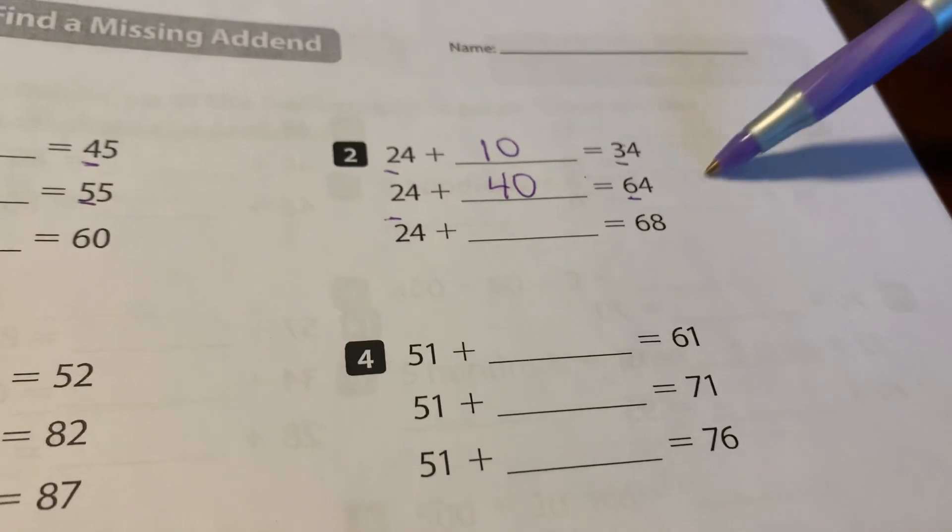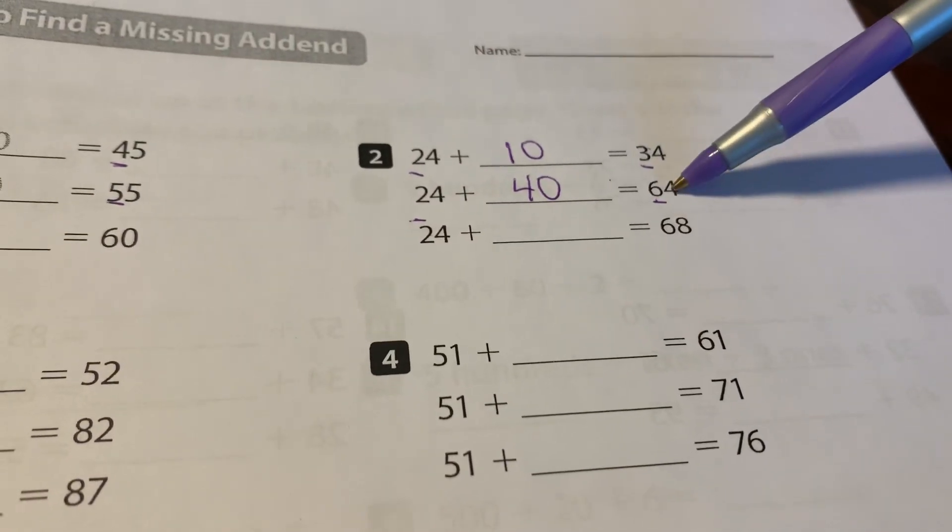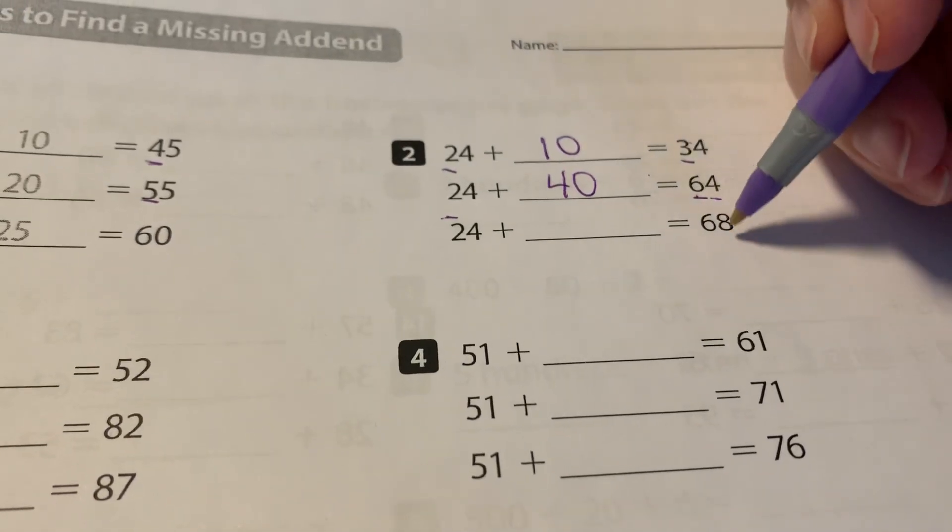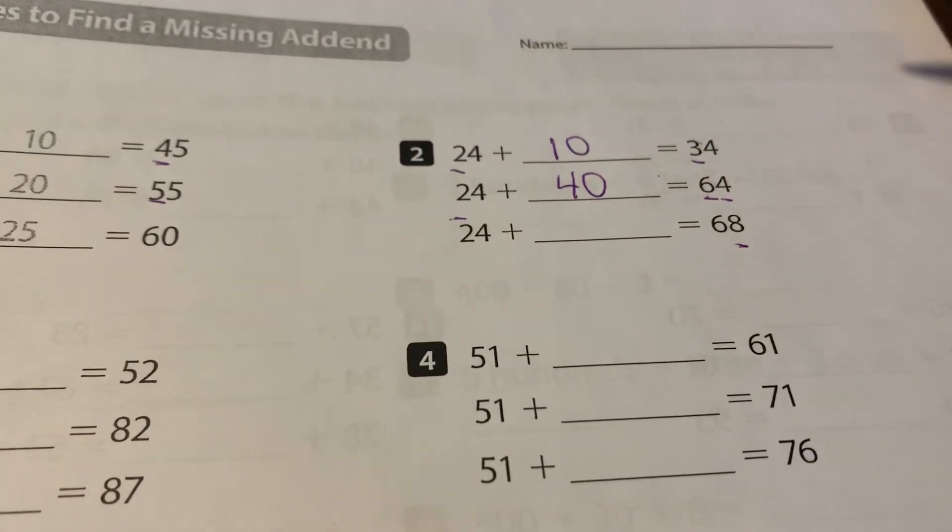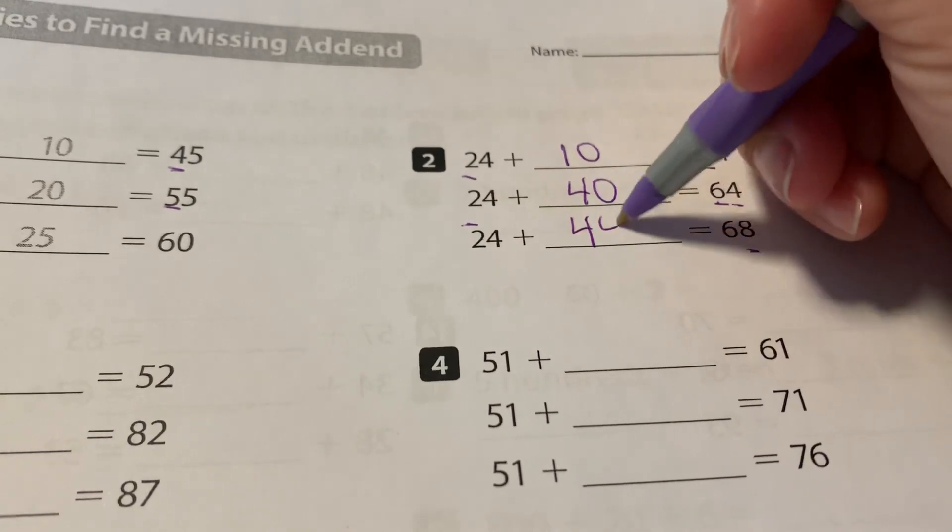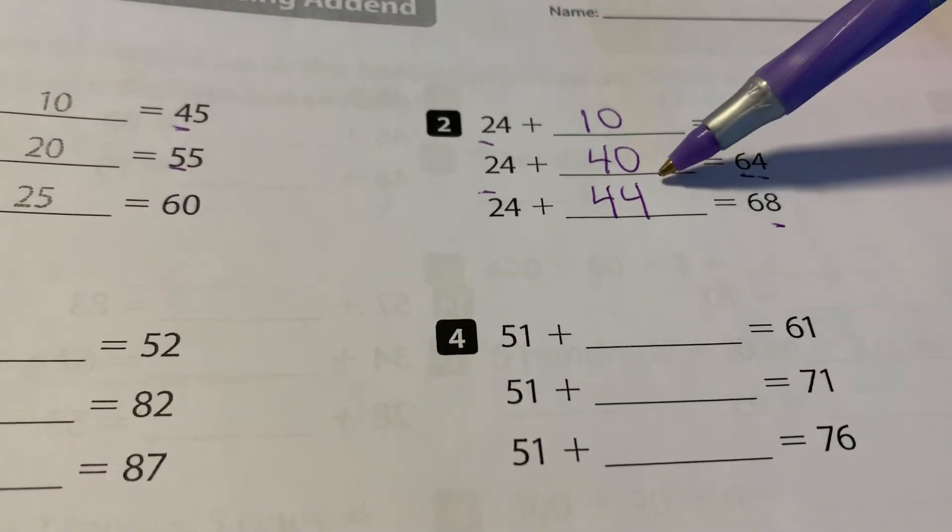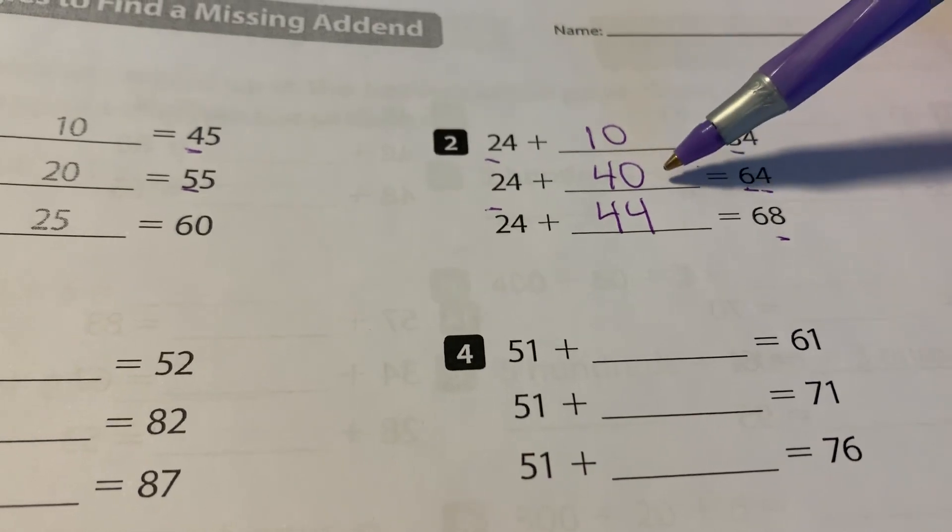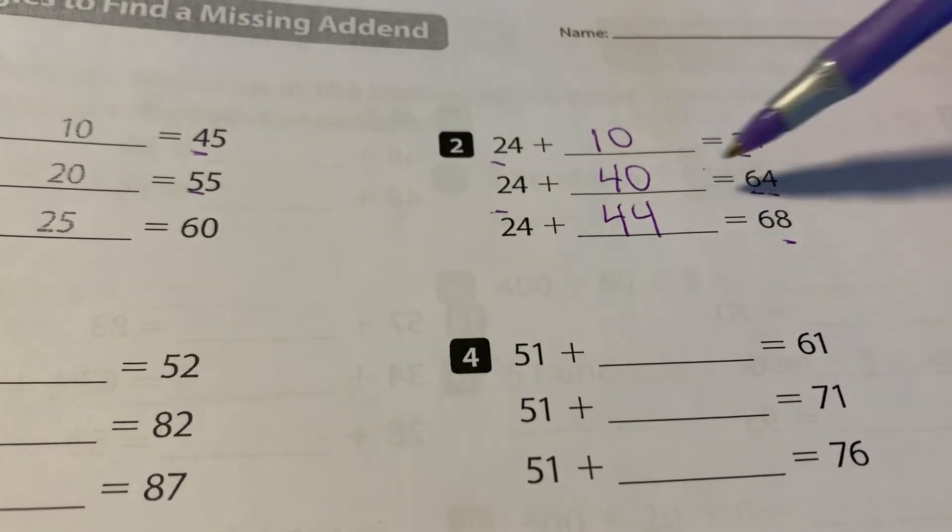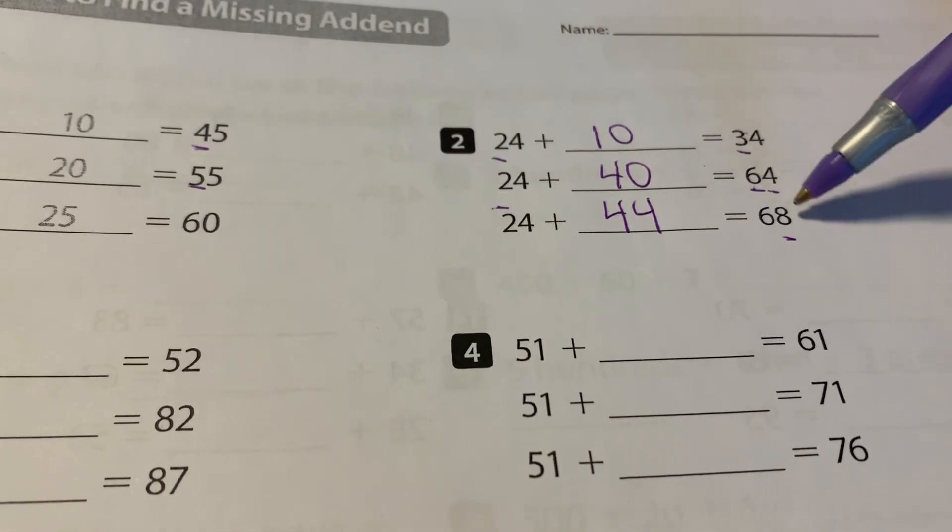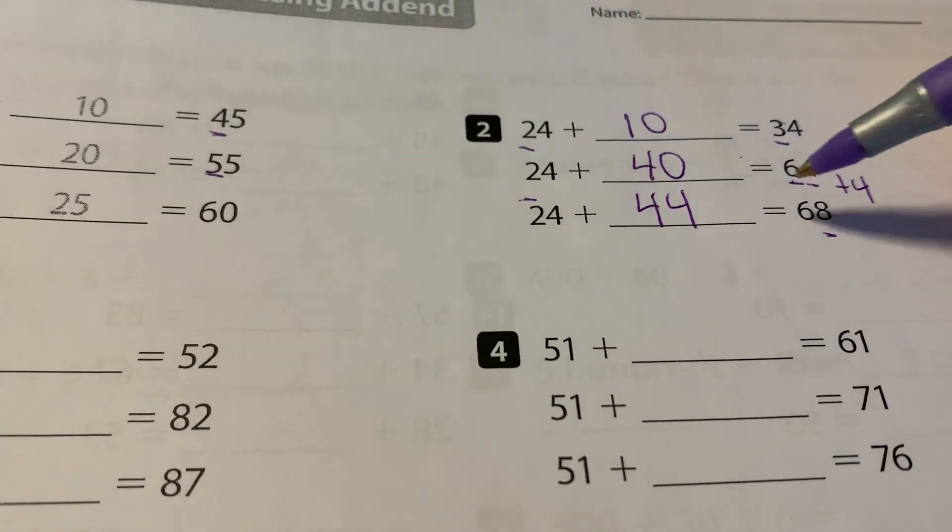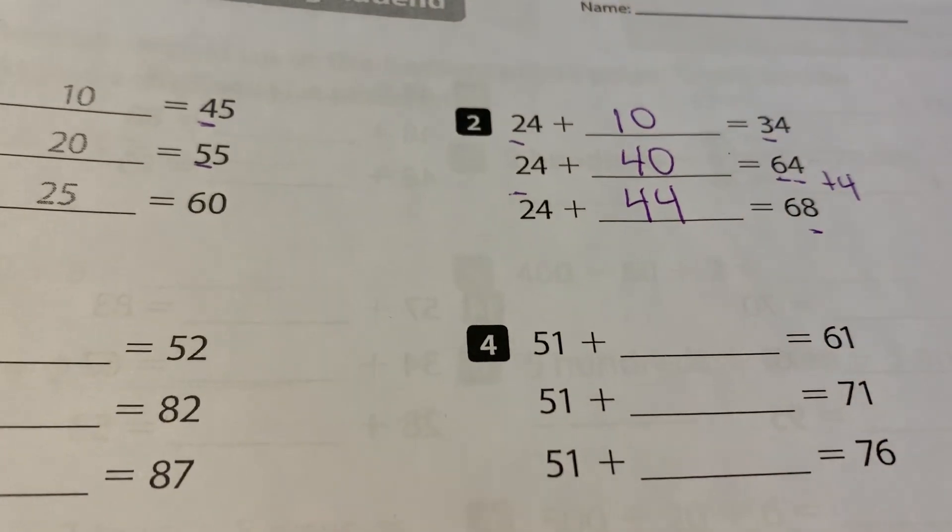Now I need to get to 68. So from 64 to 68, I might notice that here that my ones place is going to be changing by four. So that's going to be 44. Notice I already knew my tens were going to be 40, right? Because 24 plus 40 is 64. Now I'm only going up four more here. So just by adding four more here, I'm adding four here as well.